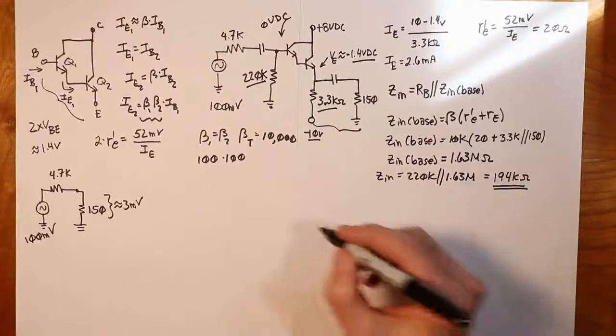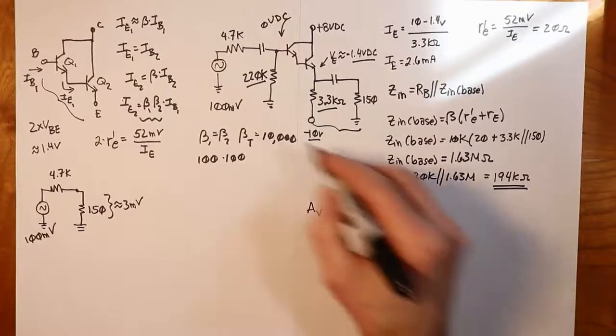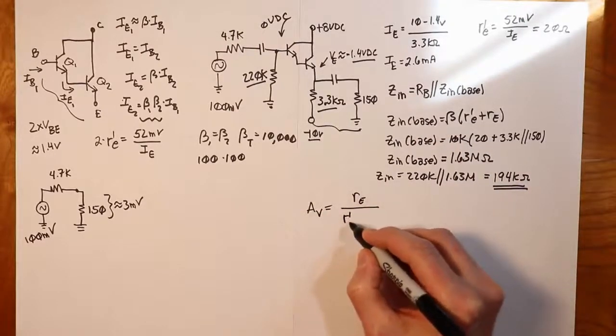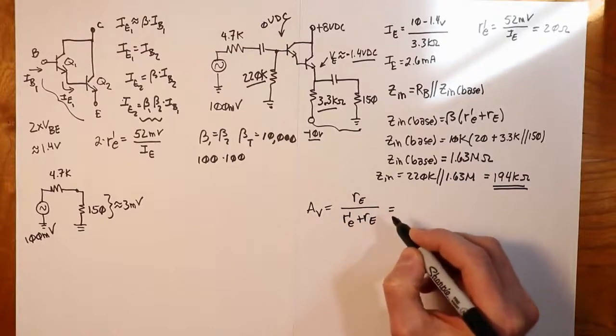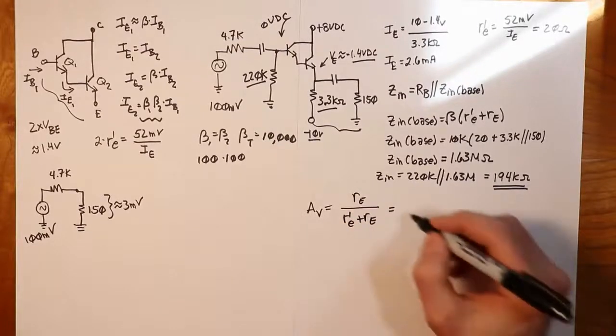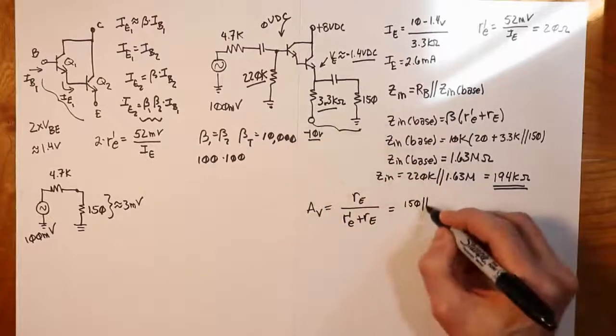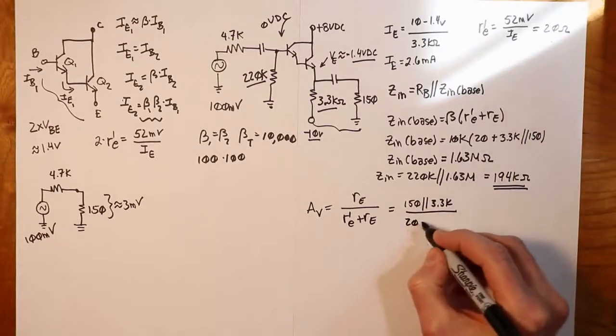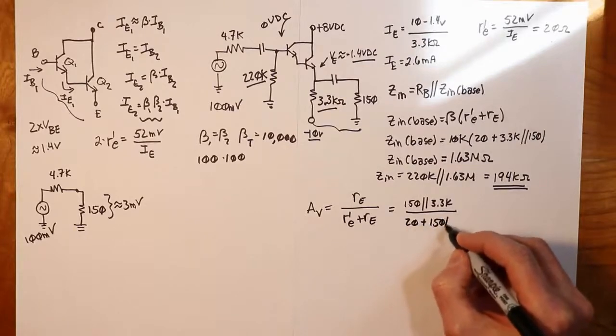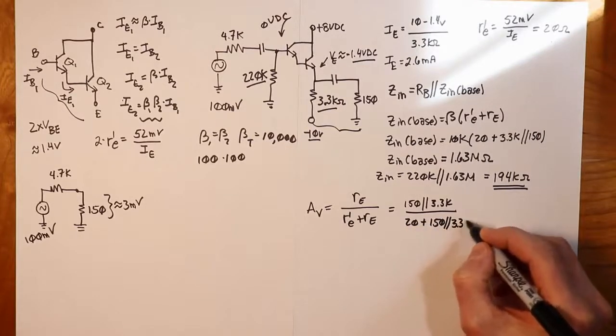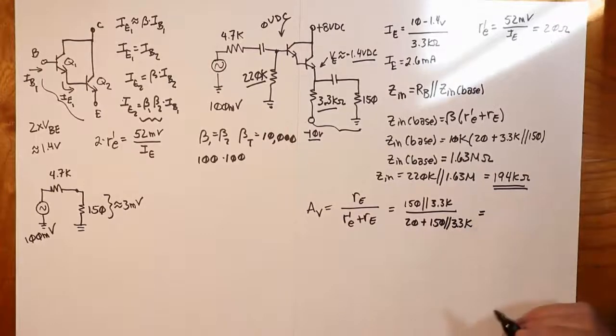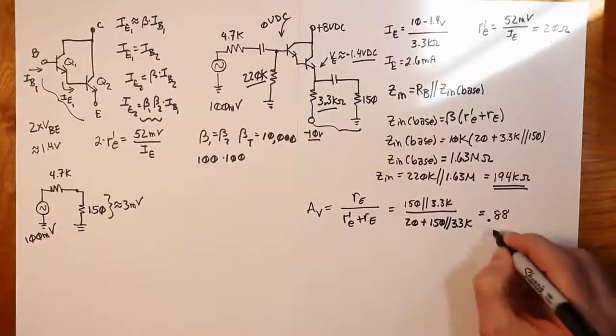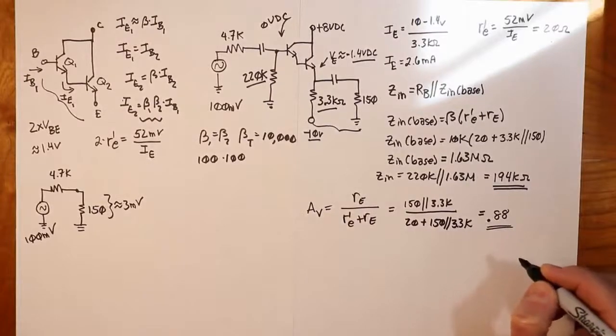What do we wind up with for voltage gain? The voltage gain for a follower is going to be RE, or RL if you prefer, divided by R prime E plus RE. So the RE is this combo of 150 in parallel with 3.3K, and R prime E is 20. Ideally we would get unity, but we're a little shy—that works out to about 0.88. So we're getting roughly 88% of the signal.